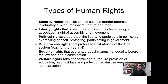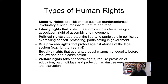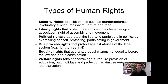What types of human rights do we have? Security rights prohibit crimes such as murder, involuntary suicide, massacre, torture, and rape. Liberty rights protect freedoms such as religion, association, right of assembly, and movement. Political rights protect the liberty to participate in politics by expressing oneself, protesting, and participating in government.